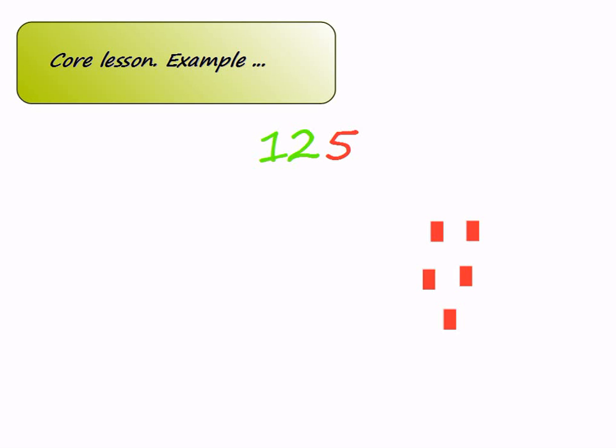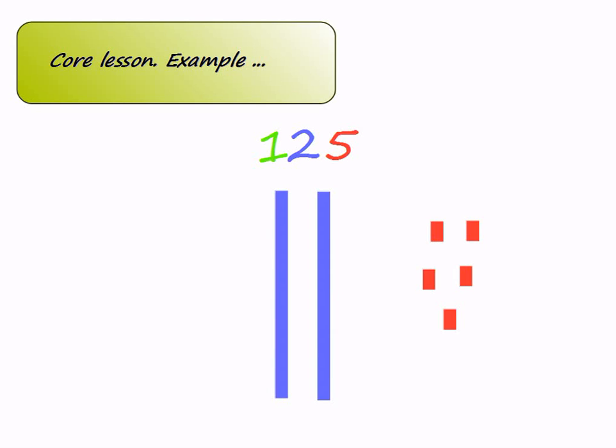Now, if we go one place to the left of the ones place, we get 2, representing the tens place. Because of that, the 2 isn't just worth 2, but in fact it is worth 20 — its place value is 20. The place value of the digit 2 is now represented by 2 blue longs, or rods, as many people call them.